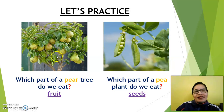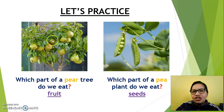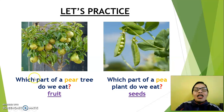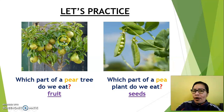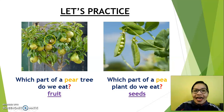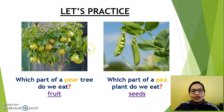Another example. Look at this tree — which kind of fruit is here? Pear. Yes, a lot of pears here. Listen to the question: which part of a pear tree do we eat? Fruit — we eat fruit. Yes, very good.